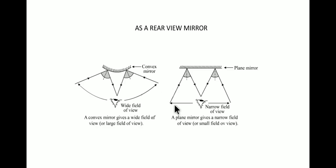Whereas a plane mirror has a narrow field of view. So a convex mirror provides much wider field of view compared to a plane mirror of the same size. Thus a convex mirror is preferred as a rear view mirror compared to a plane mirror.